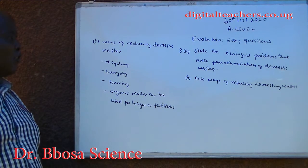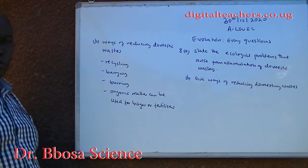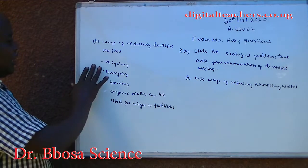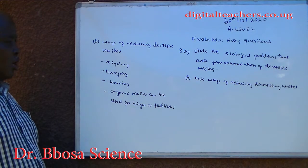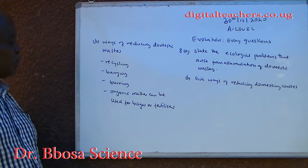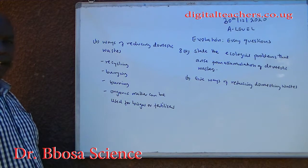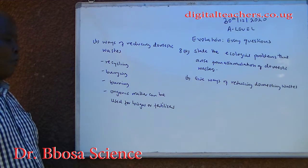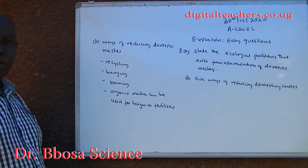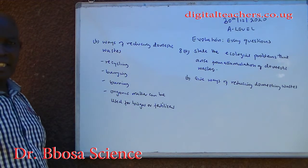B. Ways of reducing domestic wastes include recycling, burying rubbish, burning rubbish, and organic matter can be used for biogas or fertilizers.